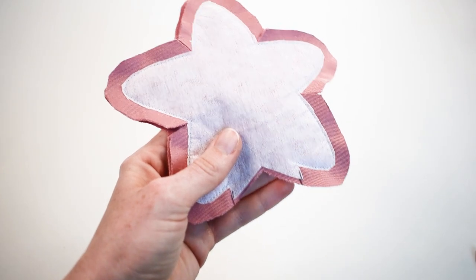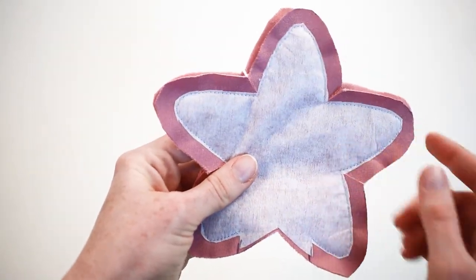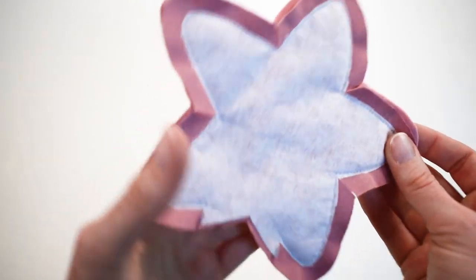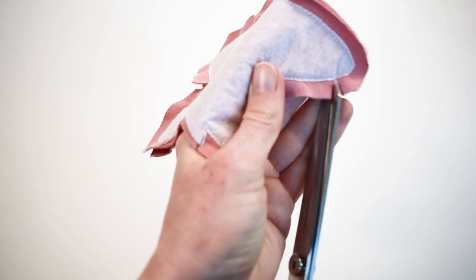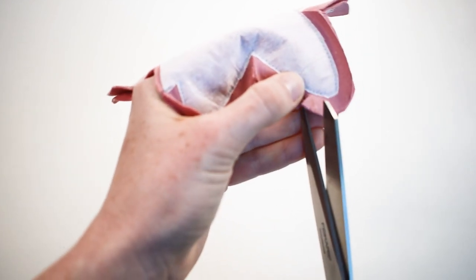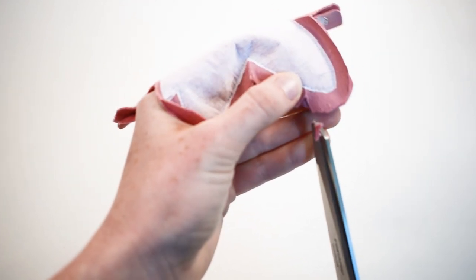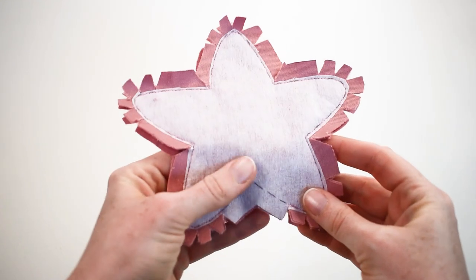Snip close to the other side. Next, we will clip the star's outside curve so it sits nicely when we turn it the right way around. It should look something like this.